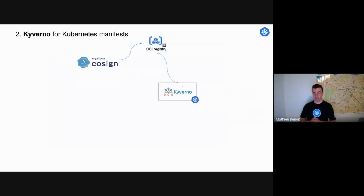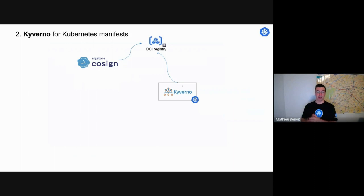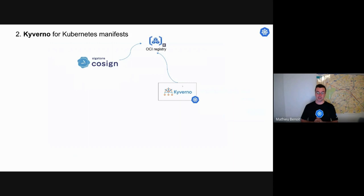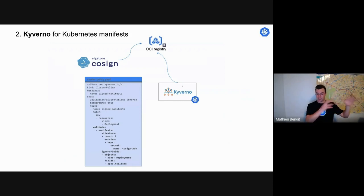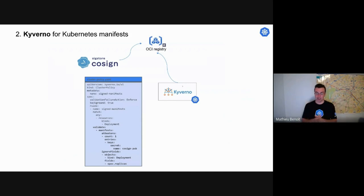Kyverno is almost the only one verifying this workflow using the kubectl sigstore sign plugin. Kyverno will be able to do the verify at admission control time — when actually deployed within Kubernetes and before being deployed in your Kubernetes cluster. That's a typical workflow. Here is a cluster policy. Earlier I mentioned the cluster policy for container images — here that's to verify the signature of your Kubernetes manifest, previously signed by the kubectl sigstore plugin.